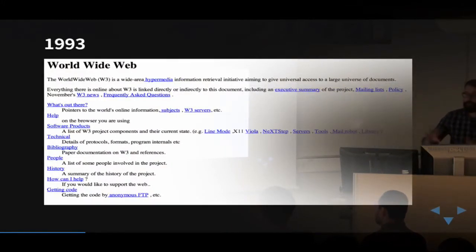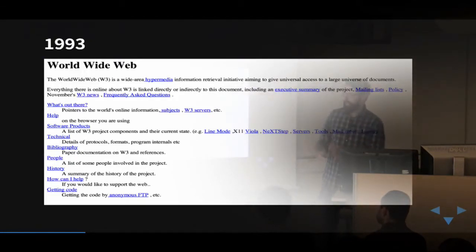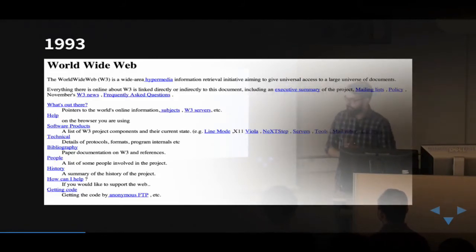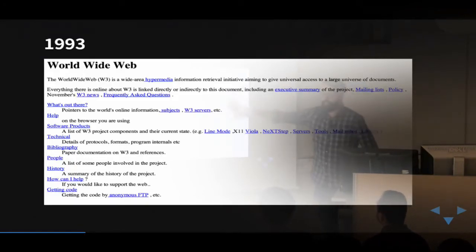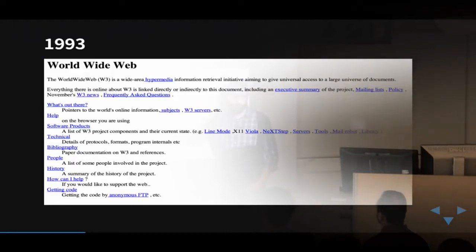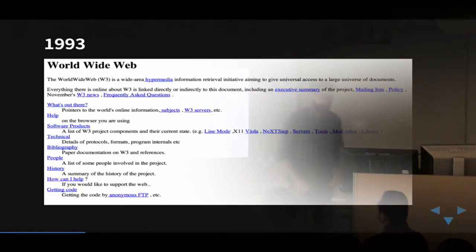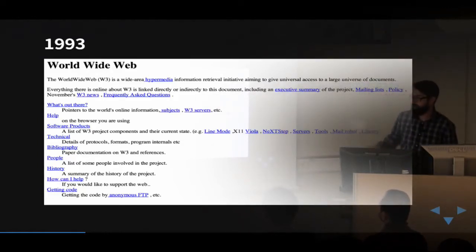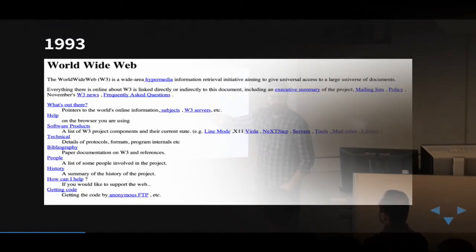Let me give you a brief history of the web. This will be a really brief overview. How many of you recognize this structure? It's a web page. Those blue things are links or anchors. This is the first web page that was published back in 1993. Does anyone know who published this page?